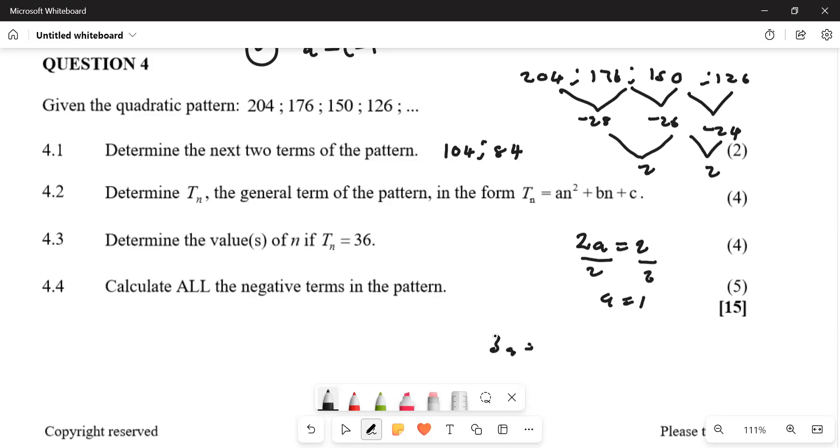So T3 is a plus b, minus 28, right? So T3, 1 plus b equals to minus 28, right? So b again? Minus 31, right?